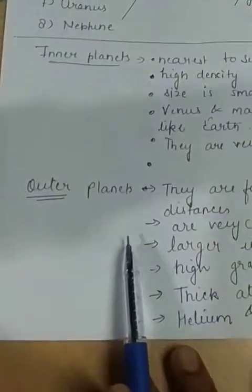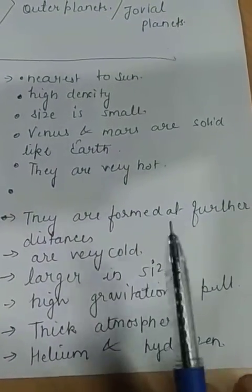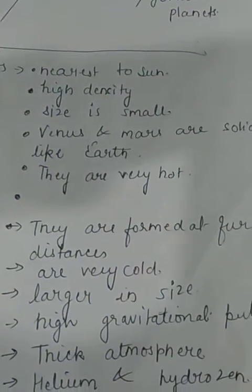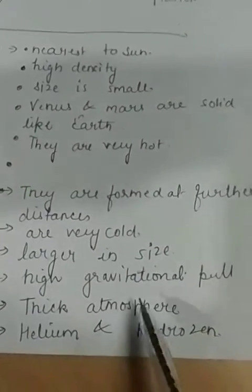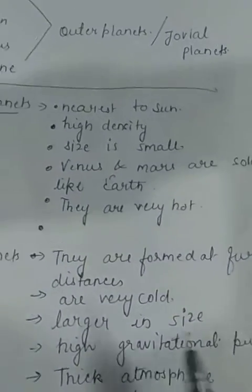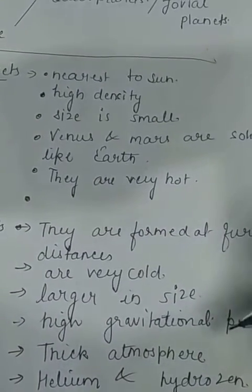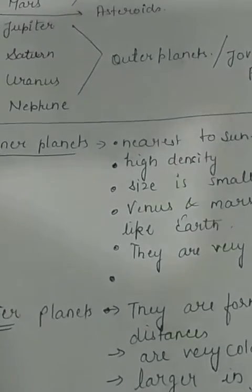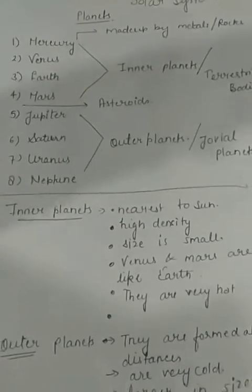The outer planets are formed at further distances and are very far from the sun, so they are very cold in temperature. Their size is larger than the inner planets. They have a high gravitational pull and a thick atmosphere. The outer layer of these planets is made up of helium and hydrogen — we have already discussed the nebula, the group of clouds.